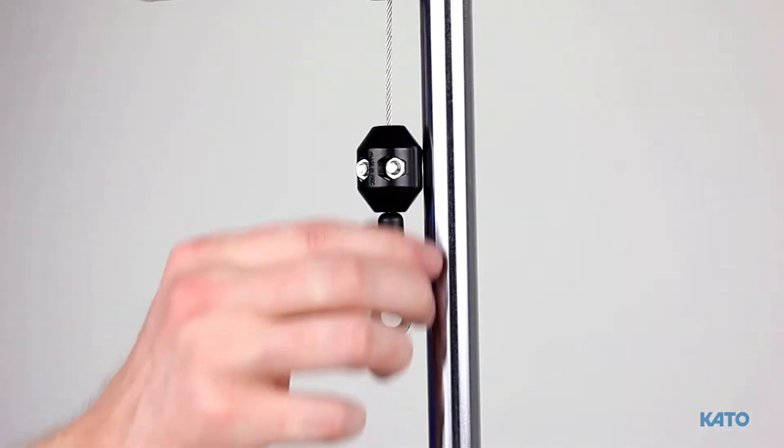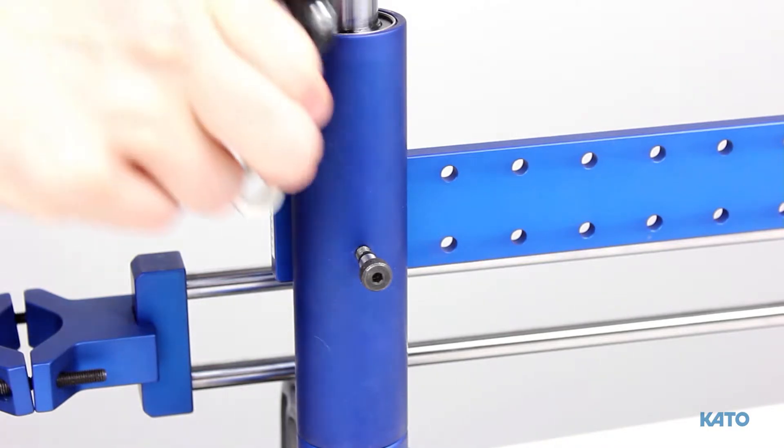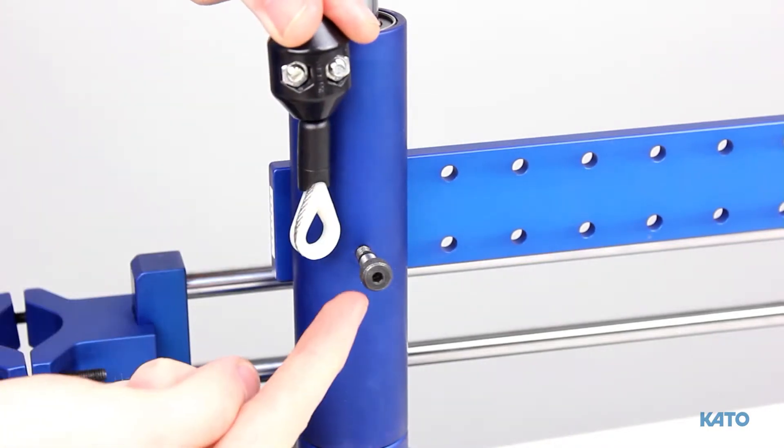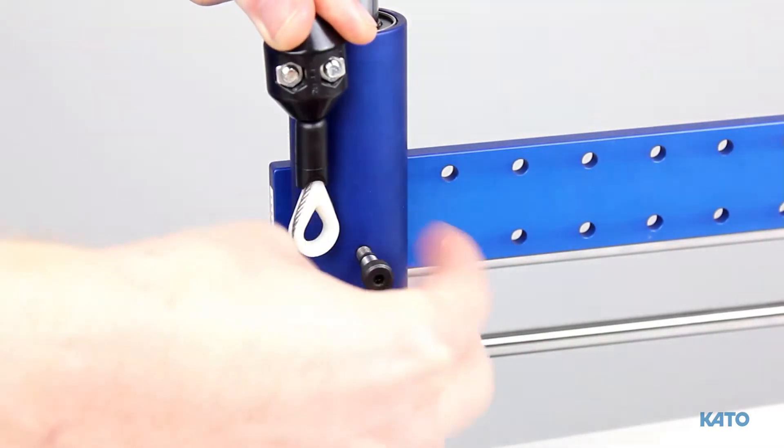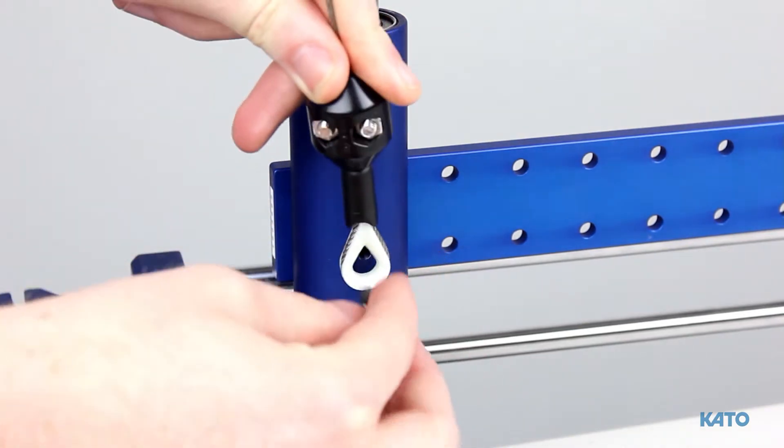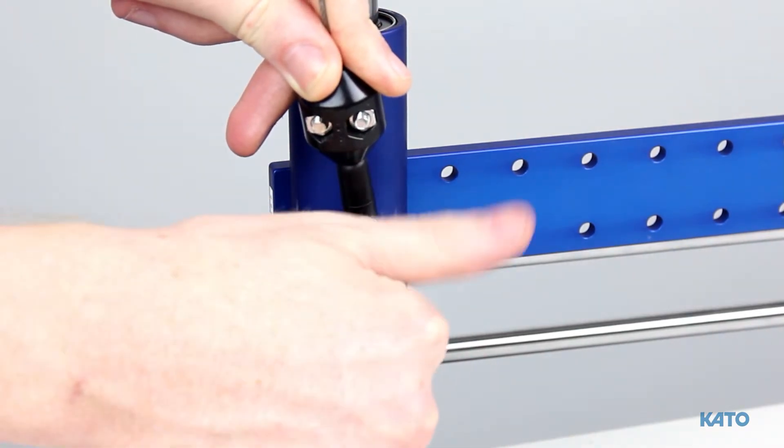Bring down the cable. Unthread the screw from the linear bearing housing. Re-thread the screw through the cable to the linear bearing housing.